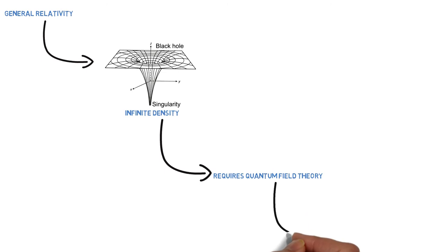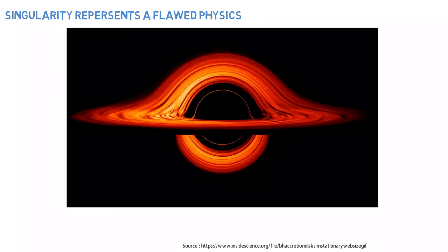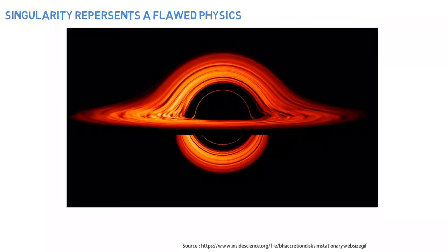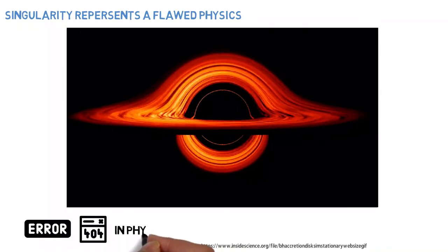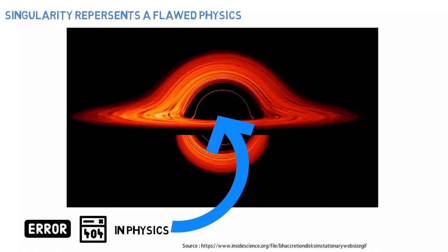But quantum field theory does not include gravitational effects, which is the main feature of a black hole. In general, singularities are the non-physical mathematical result of a flawed physical theory. When scientists talk about black hole singularities, they are talking about the errors that appear in our current theories and not about objects that actually exist.